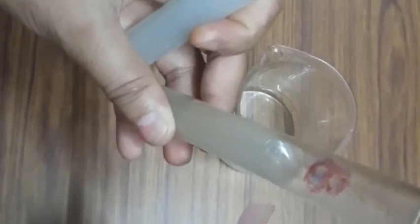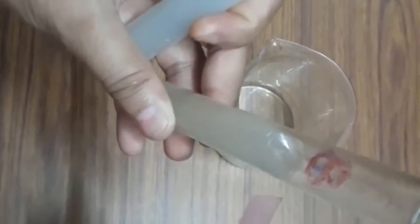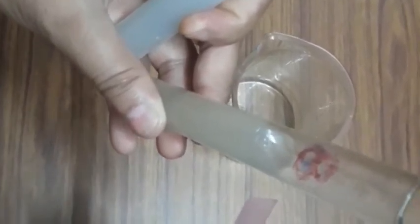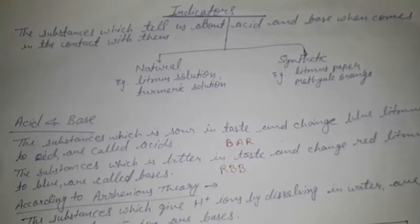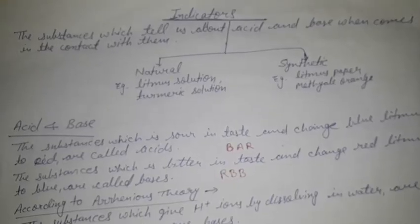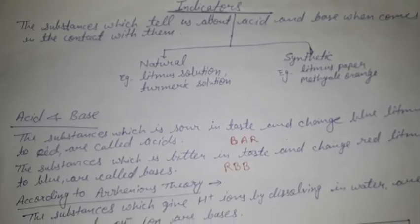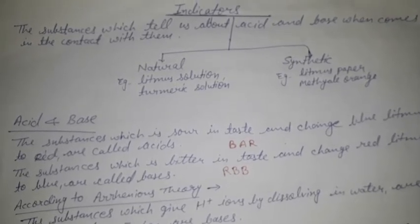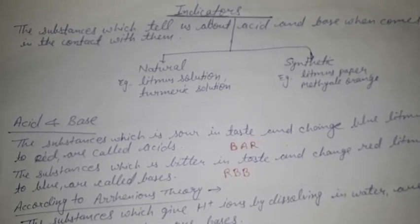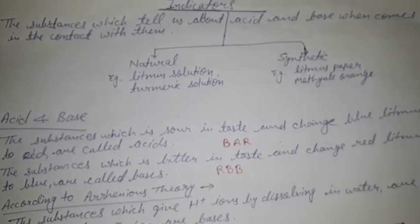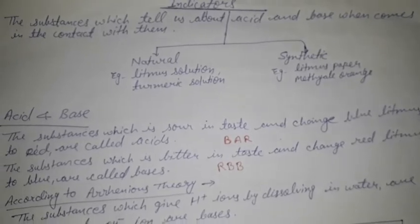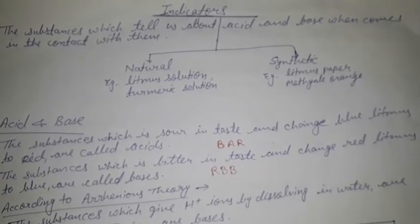This litmus paper is working as an indicator, so now we will study what an indicator is. Indicators are substances which tell us about the acid and base when these substances come in contact with acid and base. That is known as indicators.